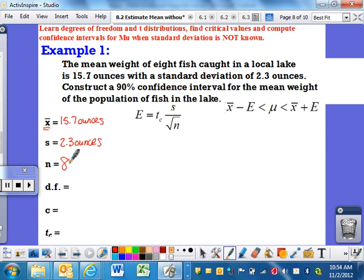What is degrees of freedom? Degrees of freedom, if you look on your formula sheet, is just N minus 1. So 8 minus 1 is 7. That's going to help us find our critical value for T. Confidence interval, how confident do I want to be? A 90% confidence level.